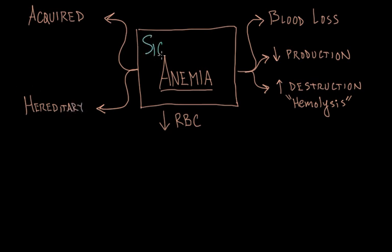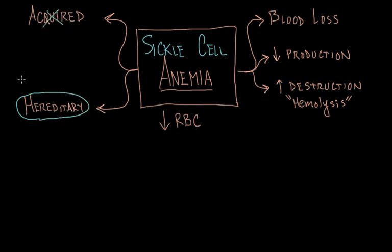So where does sickle cell anemia or sickle cell disease fit within this framework? Sickle cell anemia is a hereditary disorder. It's an autosomal recessive disorder, which means you have to have two affected alleles to have the disease. It affects about 70,000 individuals in the United States and predominantly affects individuals of African descent.